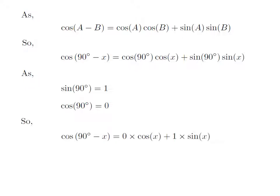Let's replace the value of sine of 90 degree and cosine of 90 degree in the above expression of cosine of 90 degree minus x. So, we get cosine of 90 degree minus x is equal to 0 into cosine of x plus 1 into sine of x.